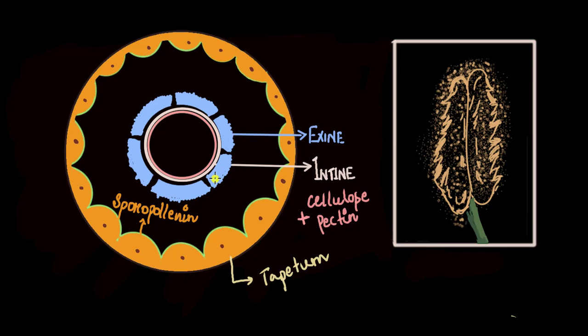And now with two layers on the outside of this microspore, this microspore is now called a pollen. We have already been calling it a pollen, but any microspore that has an intine and an exine outside it, we call it a pollen. So now it has become a proper pollen.